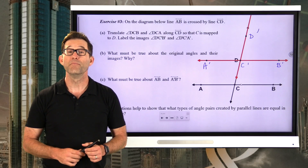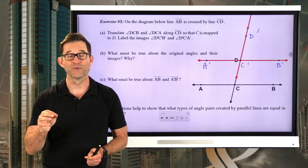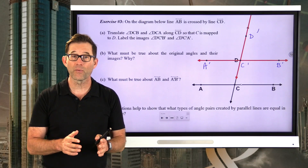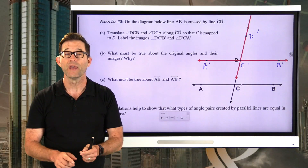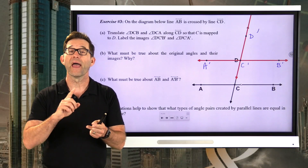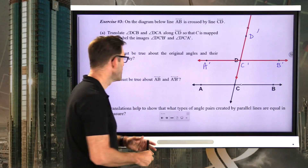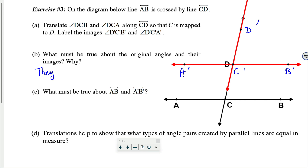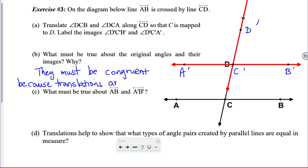Letter B: what must be true about the original angles and their images? Angle DCB and angle D'C'B', and likewise angle ACD and angle A'C'D', must be congruent because translations are rigid motions. One of the most important things about rigid motions is that they preserve distances and they preserve the size of angles.